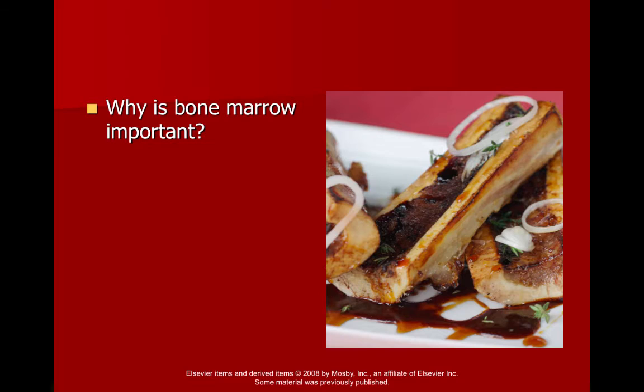Has anyone eaten bone marrow — perhaps a beef bone marrow? Why is bone marrow crucial to understanding the musculoskeletal system? Bone marrow actually makes up about 4% of our body mass and it produces all those things you learned about in the hematology lecture — white blood cells, red blood cells, platelets. All the blood cells important to us are being born in the bone marrow.